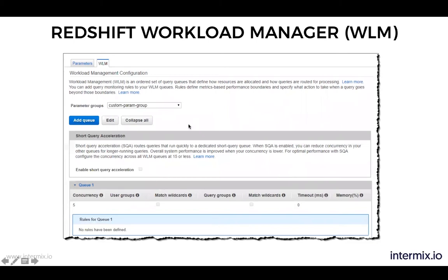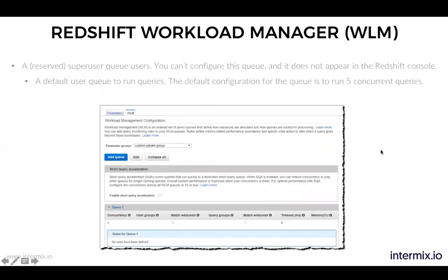This is a screenshot of your Redshift console and there is a tab in there which is the workload management configuration — this is sort of like the default setting. In the default setting, you see a queue down here. This is queue number one. Actually, there are two queues. There's a reserved superuser queue. You cannot configure this queue; it does not appear in the Redshift console. It's there for the superuser. When something goes wrong, it allows you to run one query so that way you can at least do something when your cluster has hit the wall. And then there's the default user queue to run queries. The default configuration for the queue is five — so you have one queue with a concurrency of five.